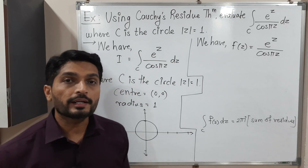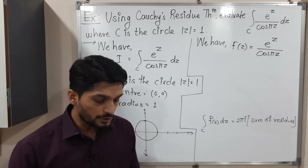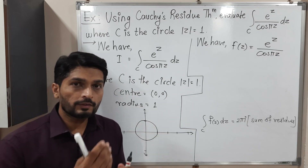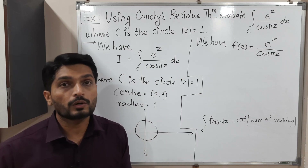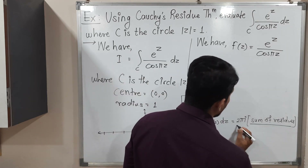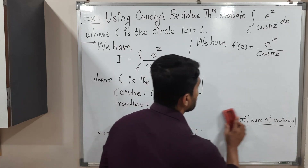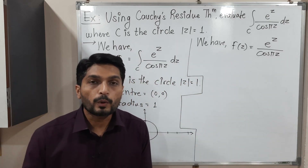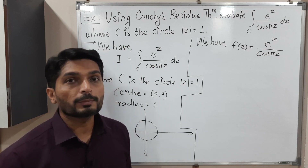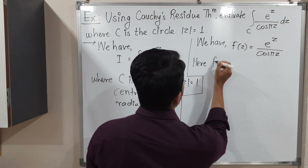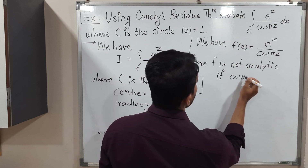With the help of residue we find the value of integration. We find the singular points of f(z), that is the points where the function is not analytic. Then we check whether those points lie inside or outside the circle. If any point lies outside, we do not find the residue there. The singular points are generally where the denominator is 0, so we find the values of Z where cos(πZ) equals 0.